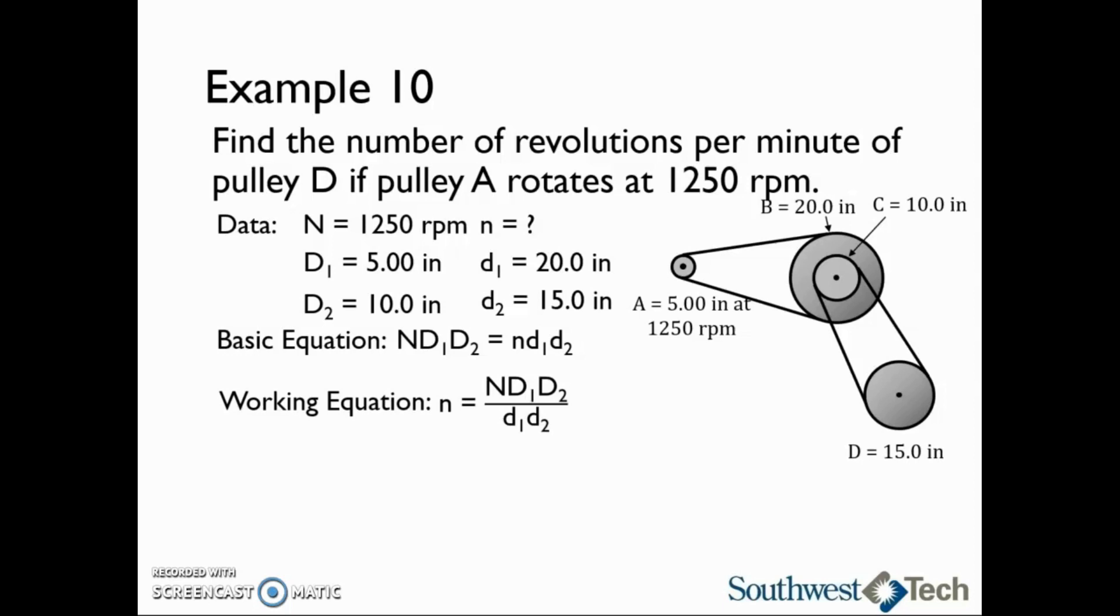Next we will substitute in our data. So we have lowercase n equals 1250 RPM times 5.00 inches times 10.0 inches divided by 20.0 inches times 15.0 inches. This should give you a speed for pulley D of 208 RPM.